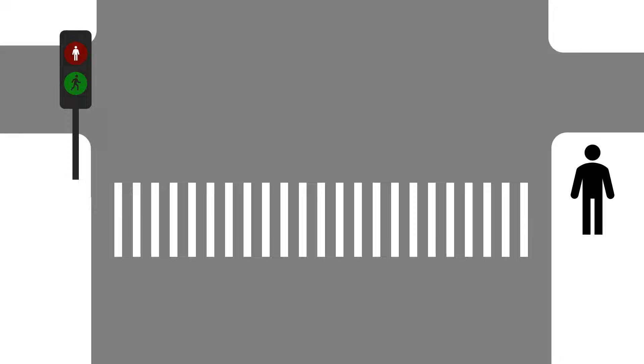Now, we will learn Redman. Redman means do not cross, because it is not safe to cross while the vehicle is still running.